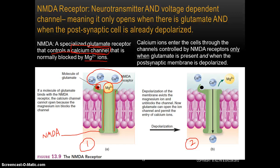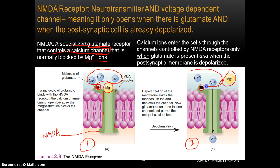Why is stimulation of the postsynaptic neuron necessary? Because when the postsynaptic cell has been stimulated, it ejects the magnesium ion from the NMDA receptor. Now, when glutamate has been released by the presynaptic cell and binds with this NMDA receptor, that will cause this calcium channel to open up, and a lot of that calcium floating around in the synapse can now enter into the cell.